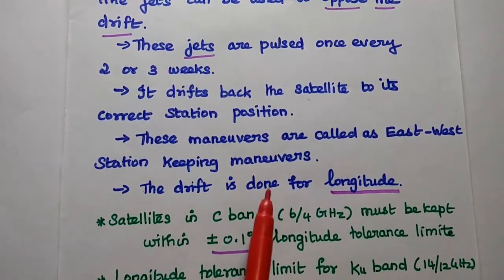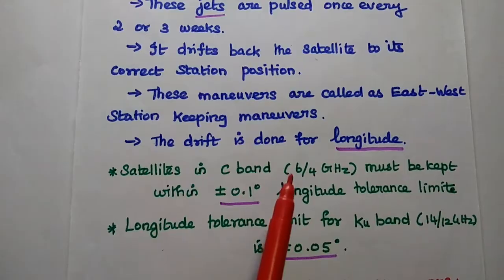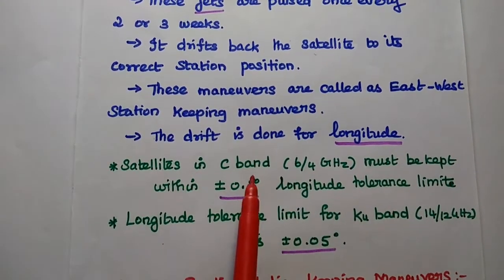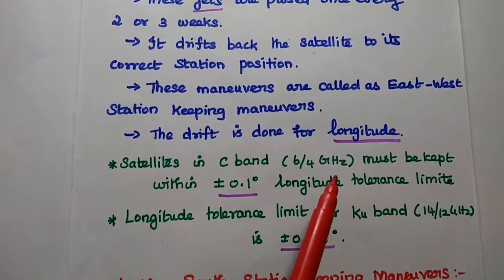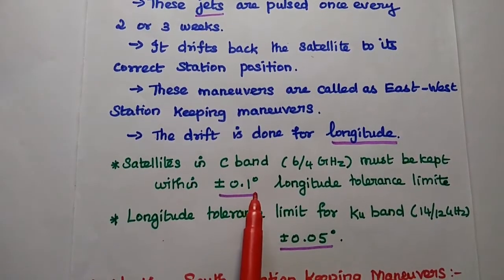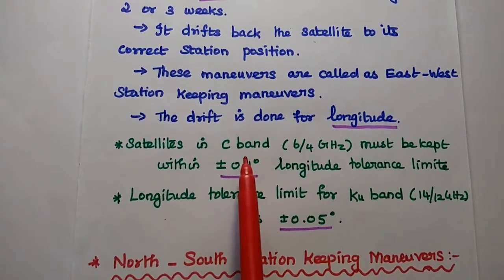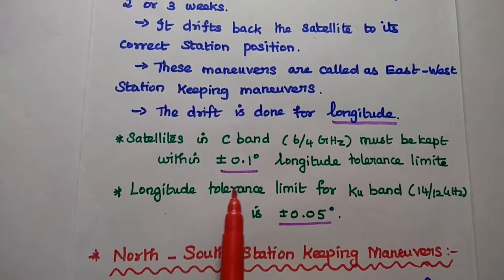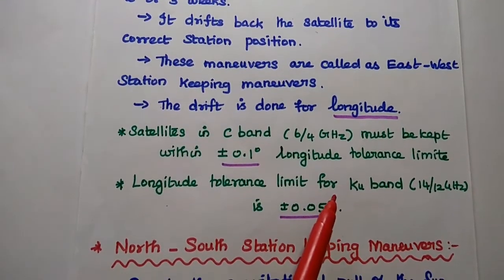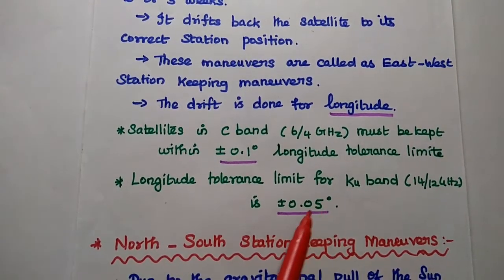The drift correction in east-west station keeping is done only for longitude, so there are longitude tolerance limits. Satellites in C-band at 6/4 GHz must be kept within plus or minus 0.1 degree. Similarly, the longitude tolerance limit for C-band at 14/12 GHz range is plus or minus 0.05 degree.